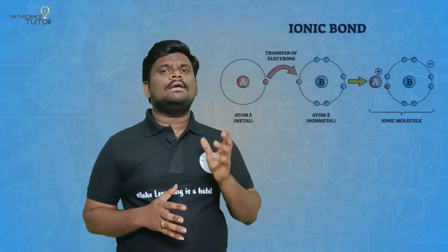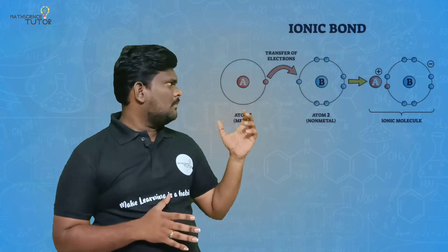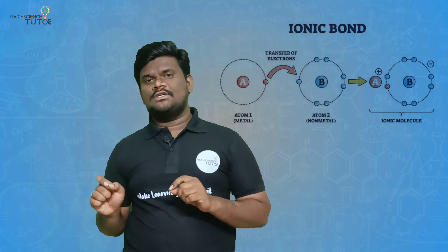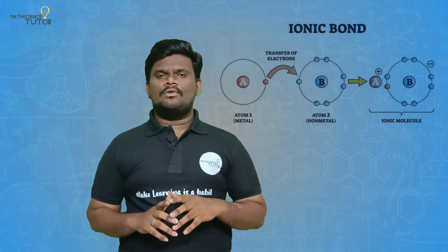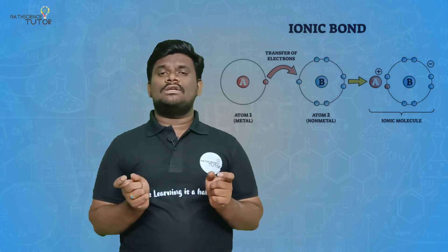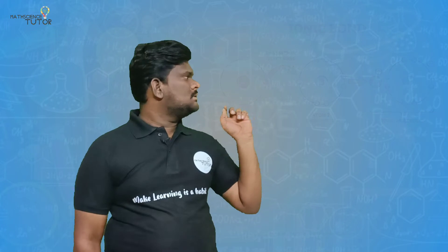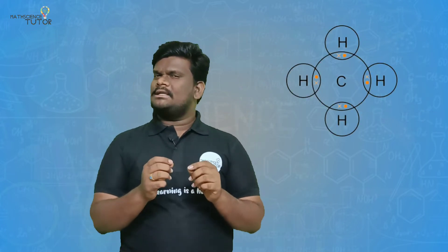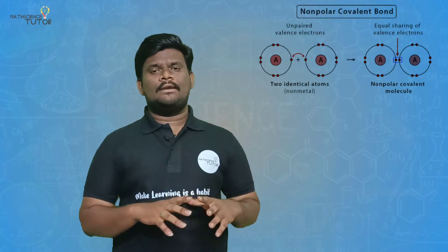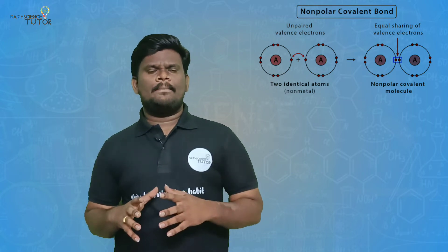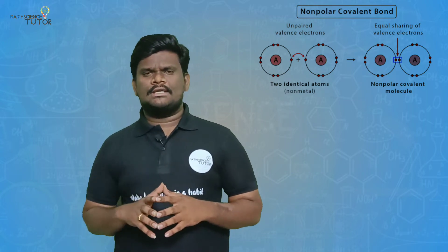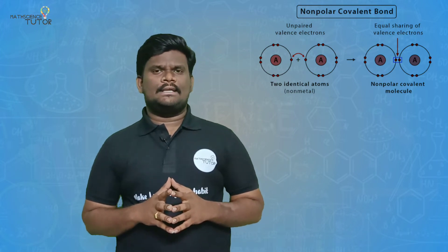In ionic bonds, both ions are present and electron transfer takes place — that is the key difference between ionic bonds and covalent bonds. Also remember that covalent bonds can be non-polar bonds or polar bonds.